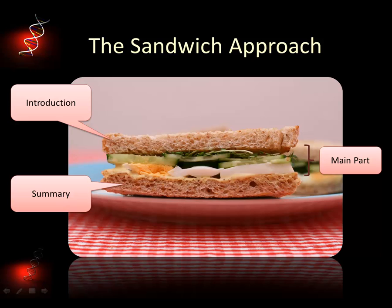For instance, if you have the structure of a report and you have themes A, B, C, and D, and in your writing you're talking chronologically and logically about A, B, C, D — that is fine, people can follow that.